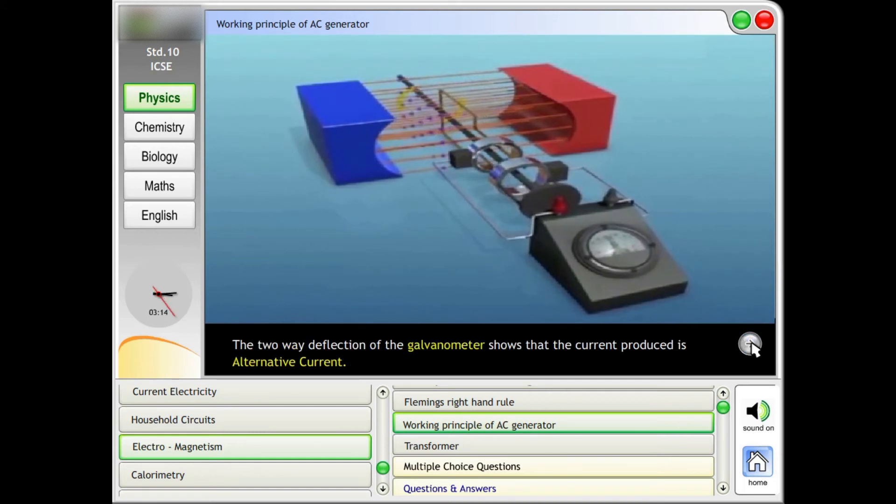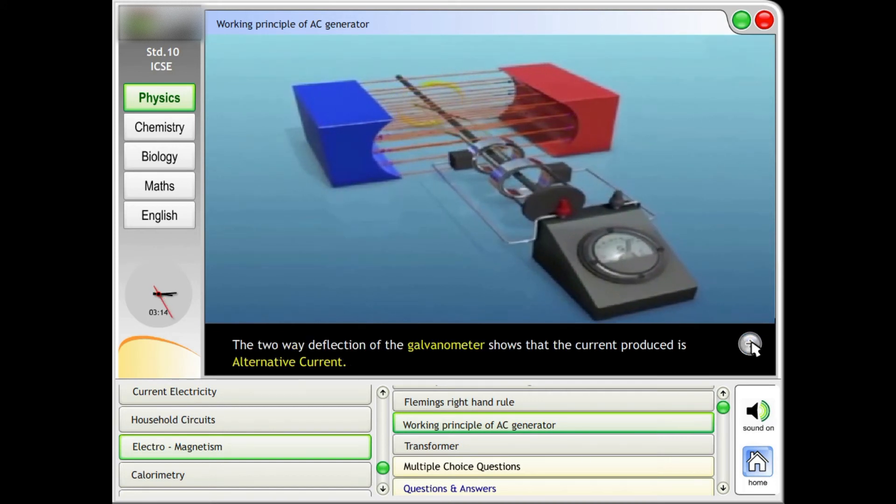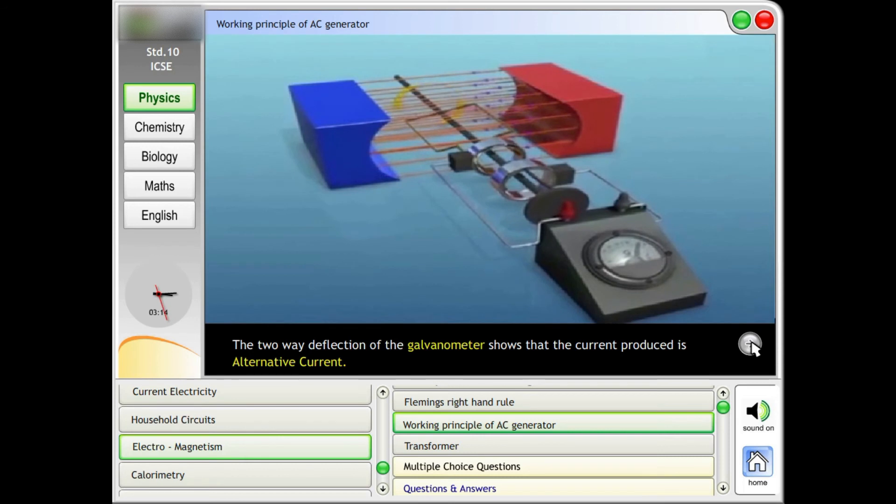The two-way deflection of the galvanometer shows that the current produced is alternating current.